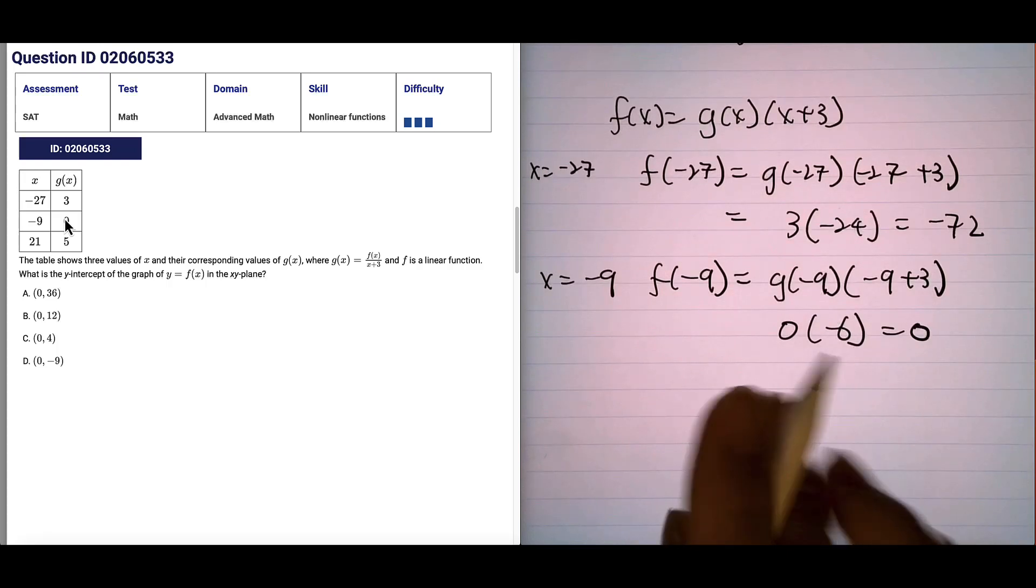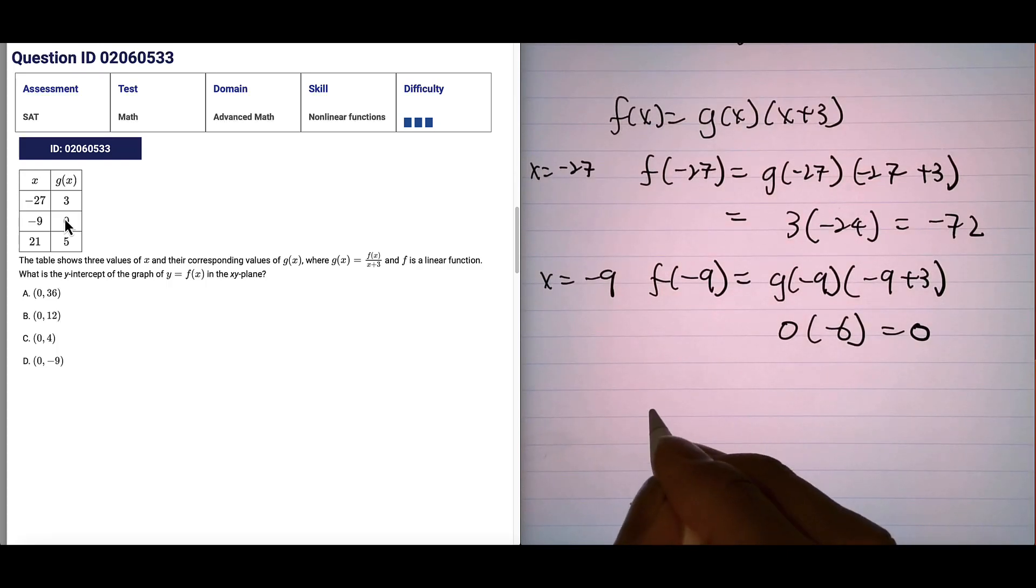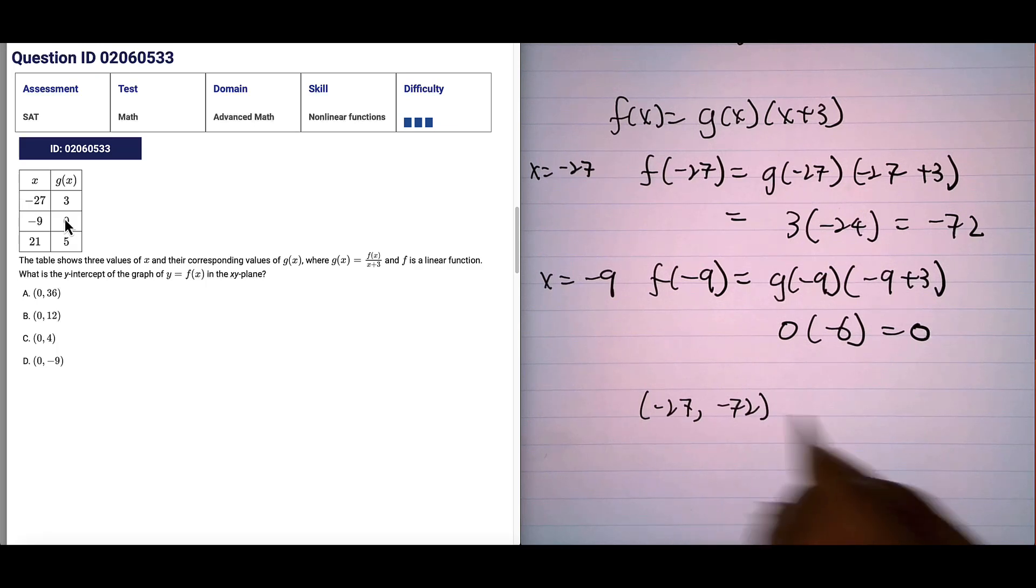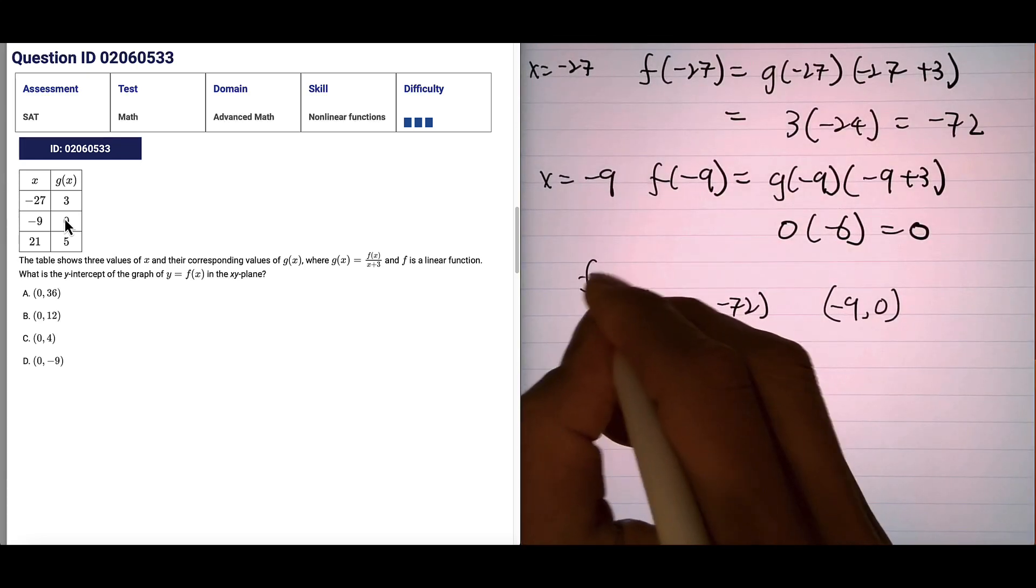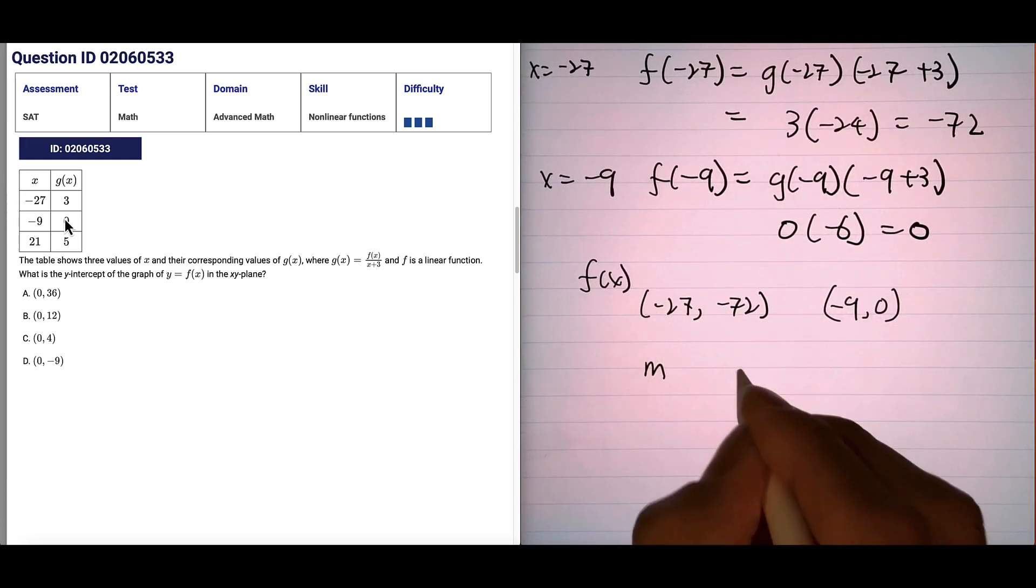So if you rewrite our f of x, we have negative 27 comma negative 72, and for the second point, we have negative 9 comma 0. So let's find the slope. Again, this is for f of x. The two points in f of x.